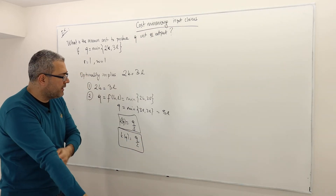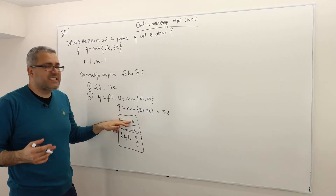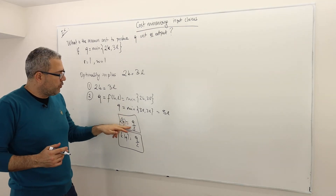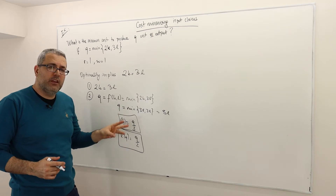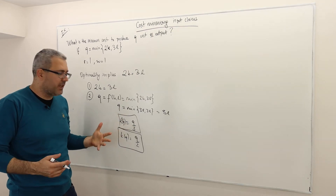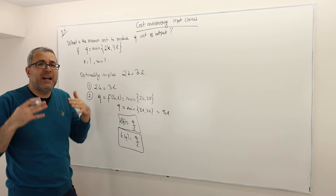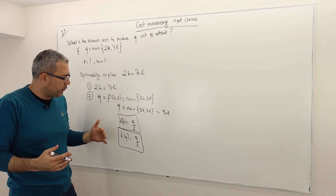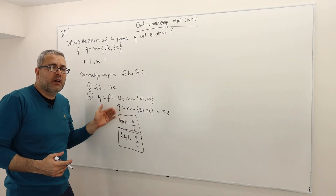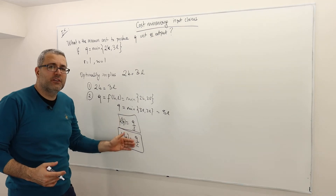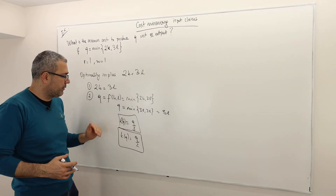So if you want to produce 6 units of quantity, you have to use 2 units of labor and 3 units of capital. If you want to produce 100 units of output, you have to choose 100 divided by 3 units of labor and 100 divided by 2, or 50 units of capital.